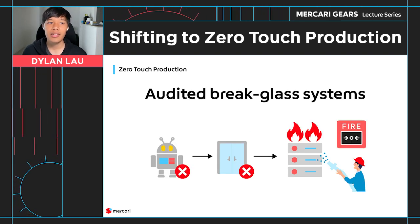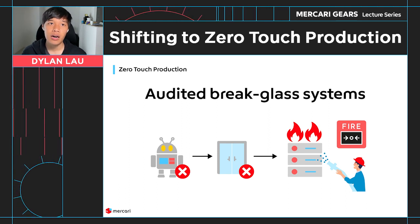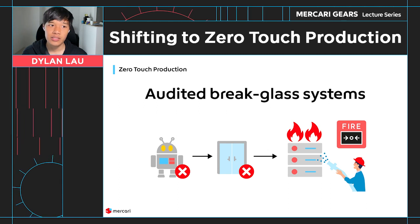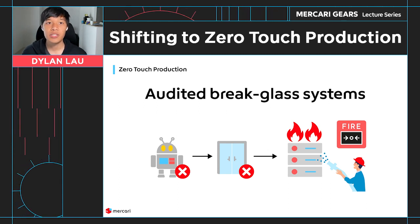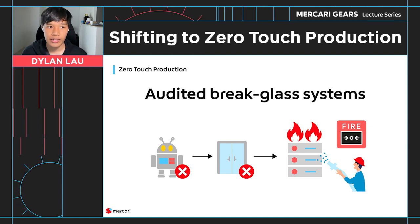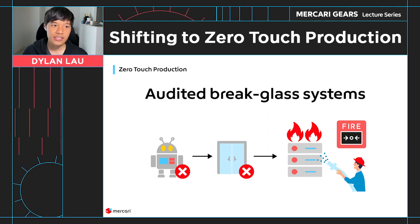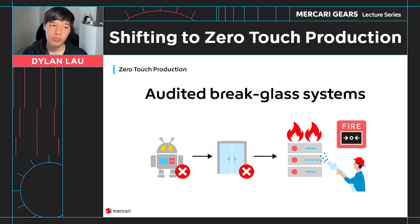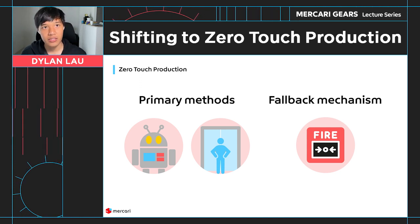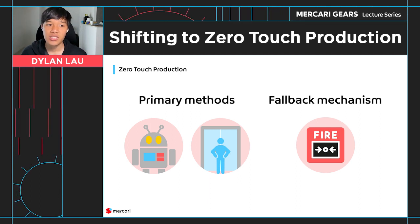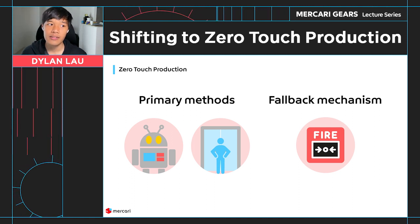A break glass system is an audited system to perform manual operations for emergency situations such as production outages, when automation nor safe proxies are feasible. Although we can cover the majority of operations with automation or safe proxies, there will still be times where manual operation is required. This is basically what a typical production environment is — users have unrestricted write access — except in zero-touch production it is not the default state but the last resort. With zero-touch production, automation and safe proxies are the primary methods of doing production operations, and the break glass system is the fallback mechanism.